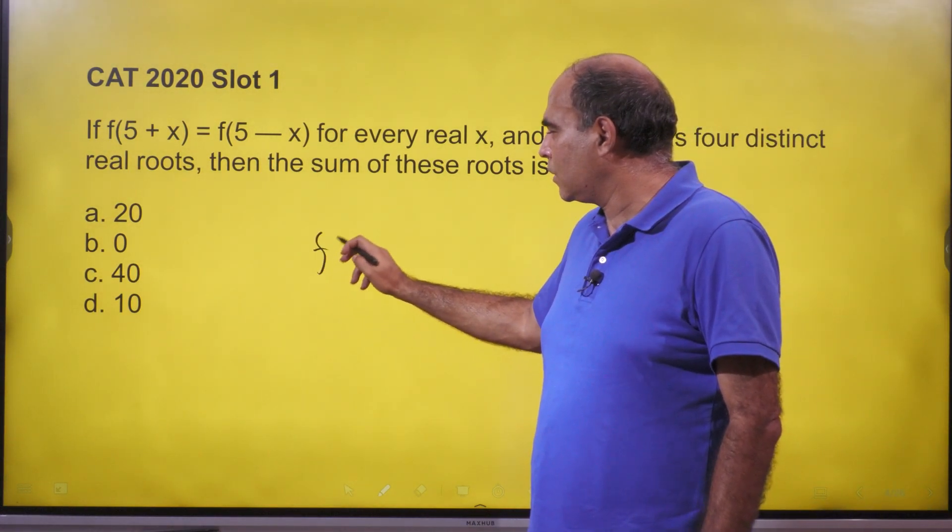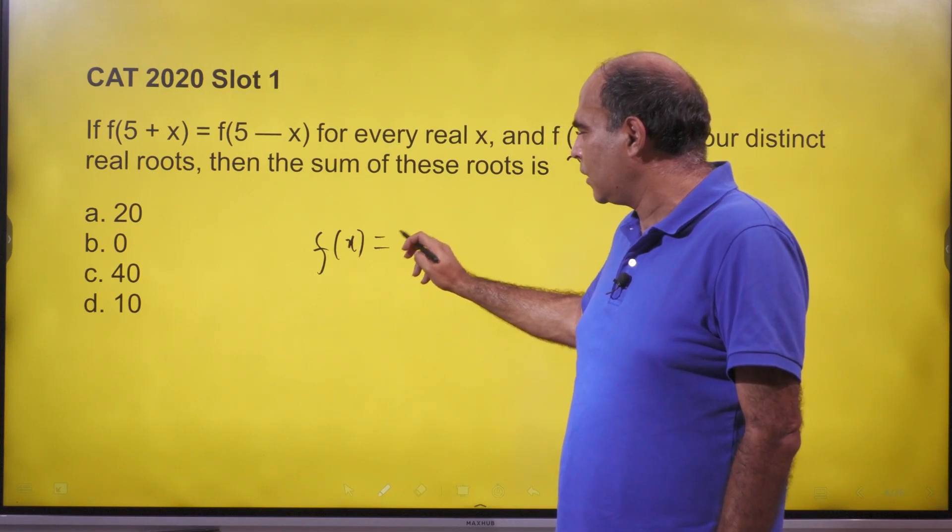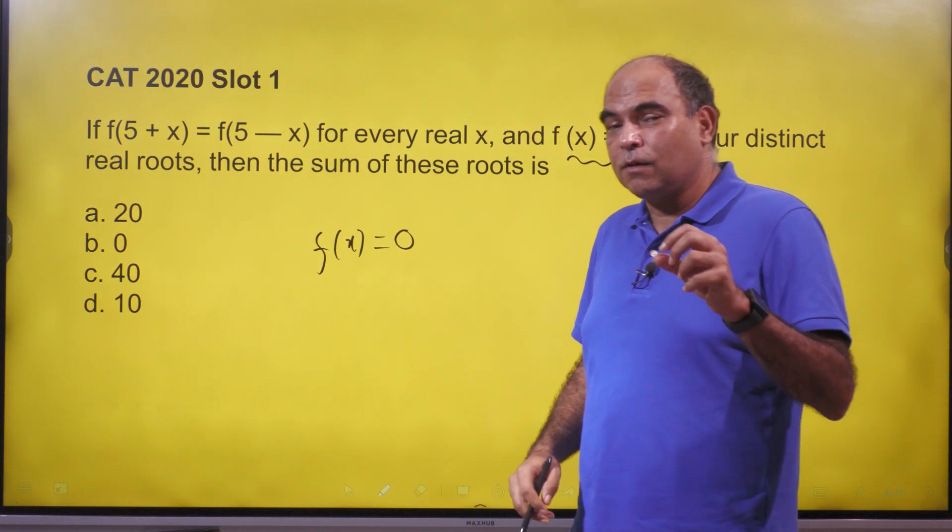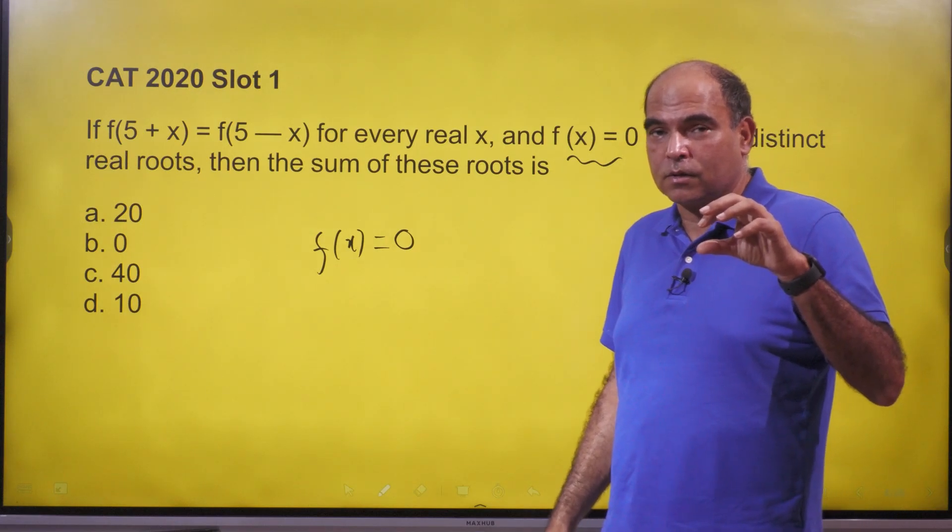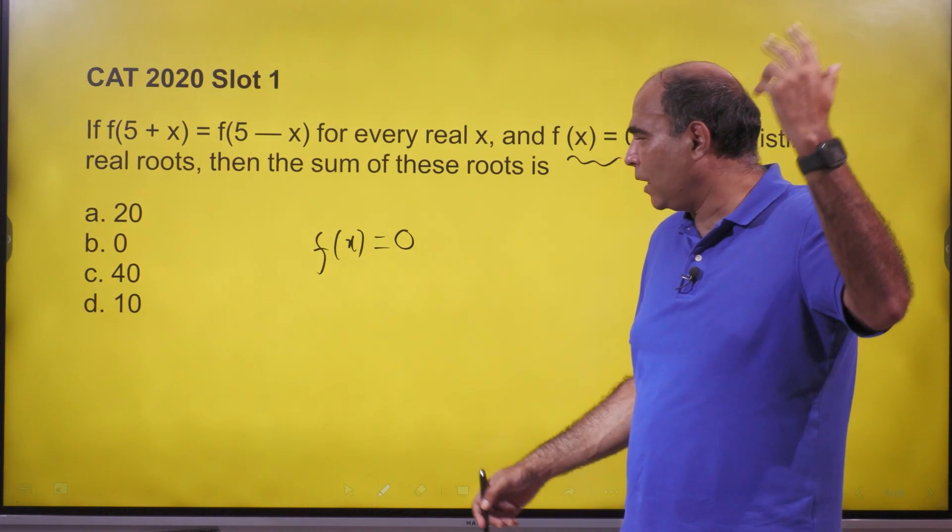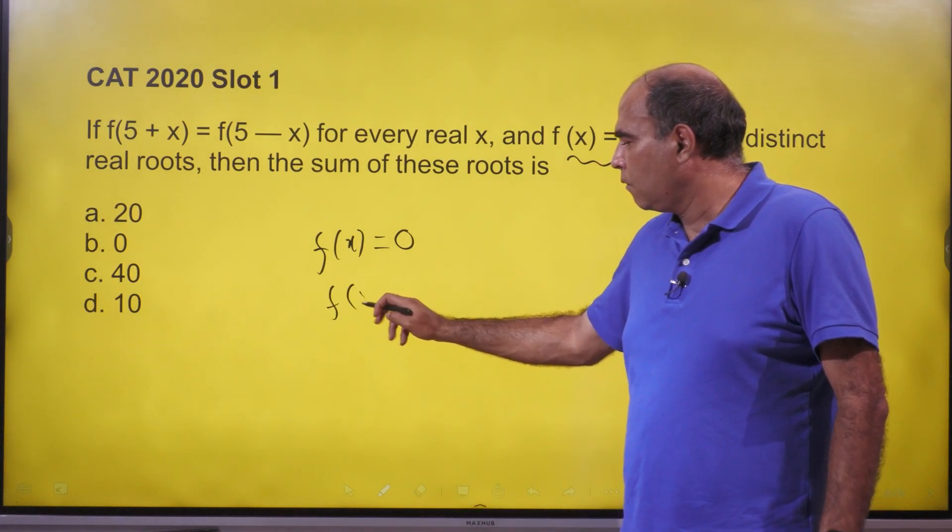When they say that f(x) = 0, there's just a simple trigger in this question. f(x) = 0 has four distinct values. So let's say some value, let's say f(5.1) = 0. If f(5.1) = 0...